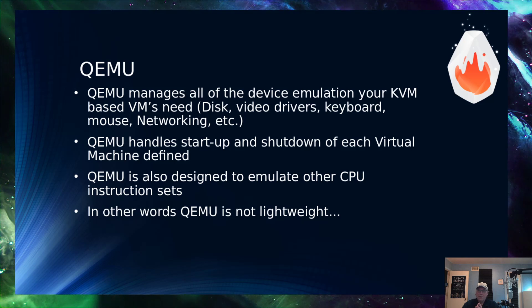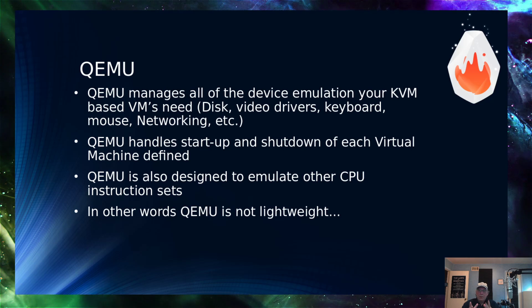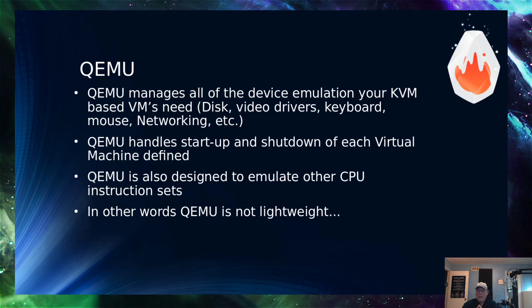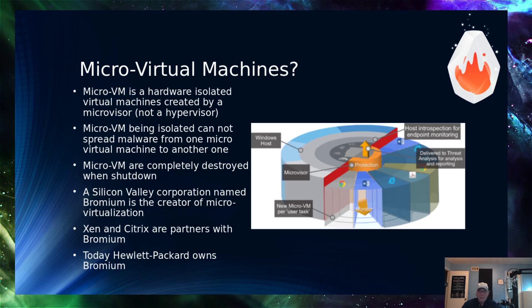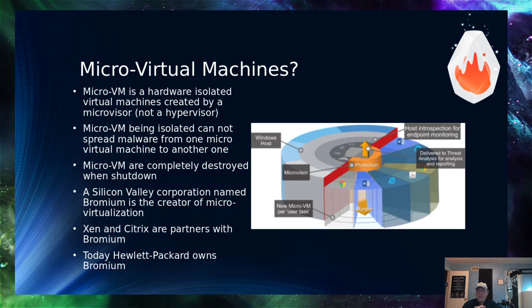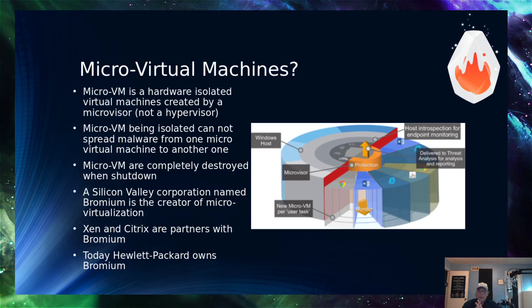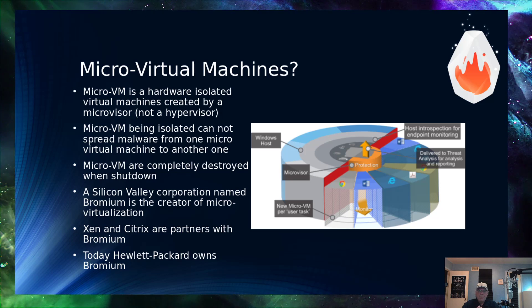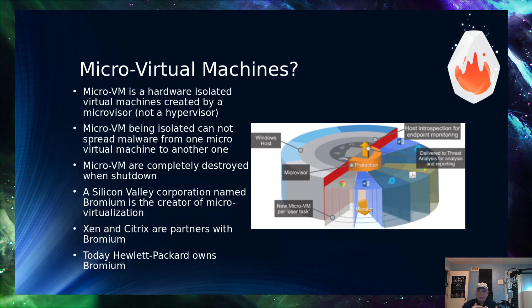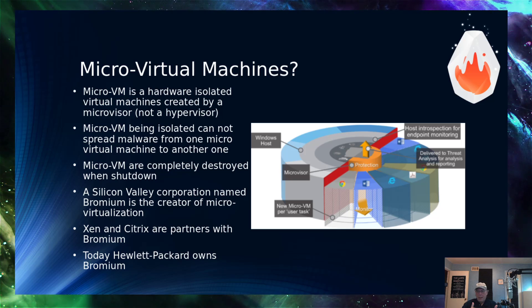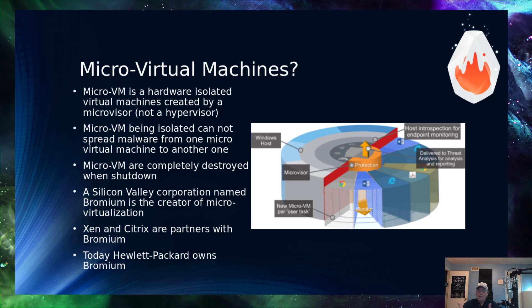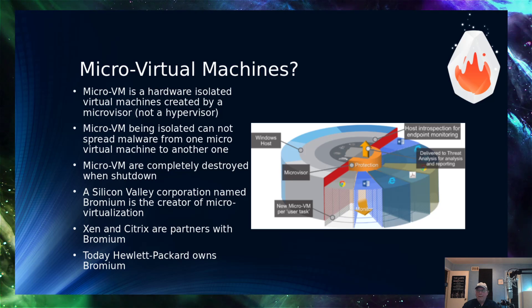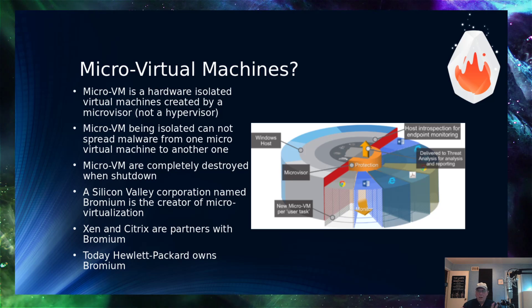In other words, QEMU is not a lightweight application — it is pretty big, does an awful lot, and it's very good at what it does. So here's the deal, and this is what changed. A micro virtual machine is a hardware-isolated virtual machine created by a microvisor, not a hypervisor. It provides isolation to prevent malware from spreading. A micro-VM comes up, runs for a while, and when it shuts down, it gets obliterated — it gets destroyed. So anything that was written to that file system inside of that micro-VM is gone. Completely history.